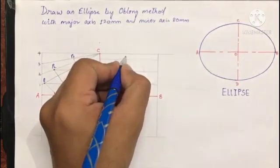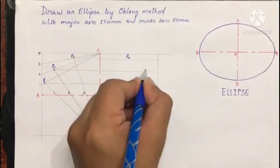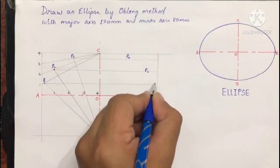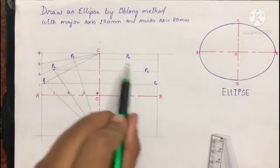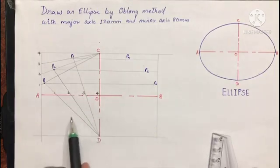Then name these points P4, P5, and P6. Now we can transfer these six points in the lower two rectangles.